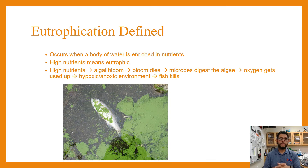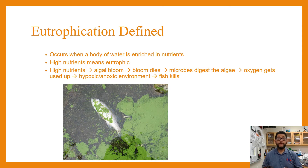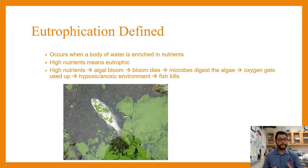How this works: you end up with high nutrients coming in from a source, and that leads to an algal bloom — that's the green stuff in the picture. The algae bloom gets to big numbers and then eventually they die, and the microbes that digest the algae end up consuming a large amount of oxygen. That drops our dissolved oxygen levels down further and further.